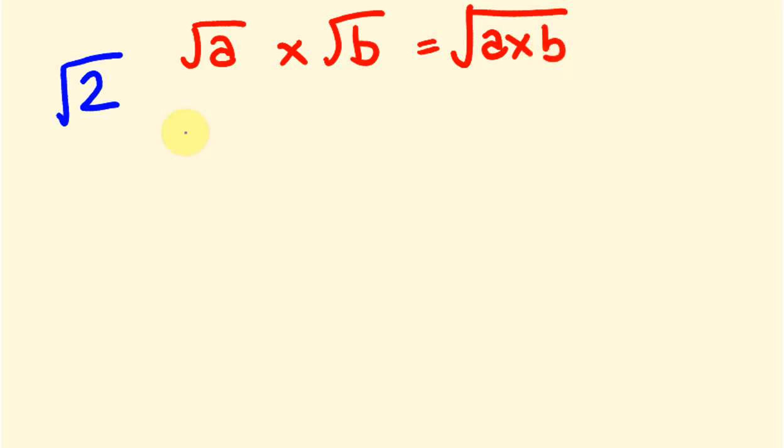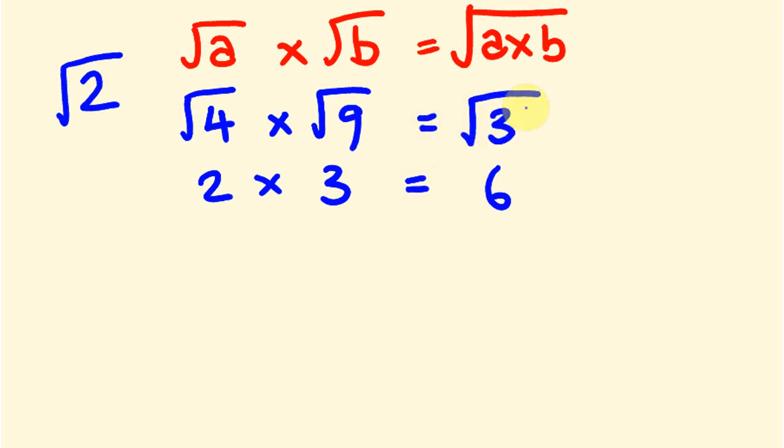I'll explain how this works using non-surd numbers. Say we had the square root of 4 times the square root of 9. The square root of 4 is 2, the square root of 9 is 3, and we multiply these to get 6. This equals the square root of 36, and you can see 4 times 9 is 36, so this rule does work. Hopefully you're pretty comfortable with this rule.